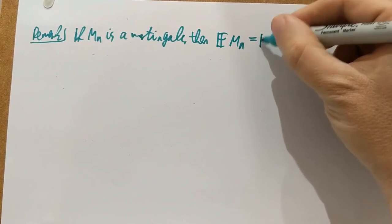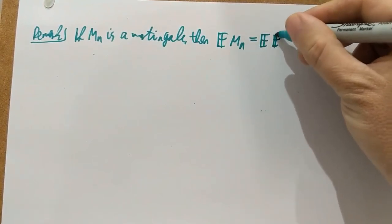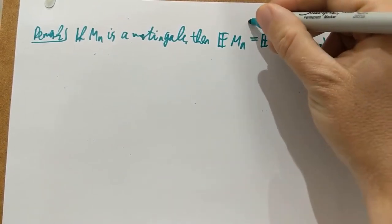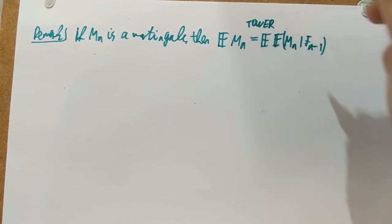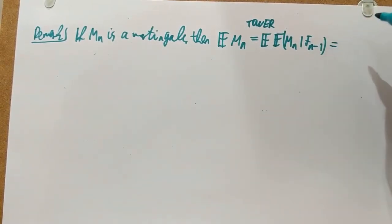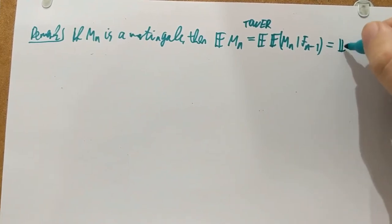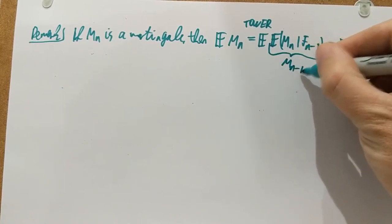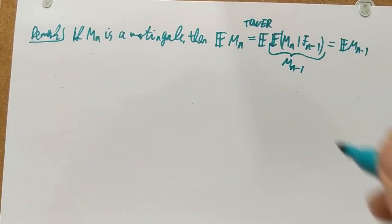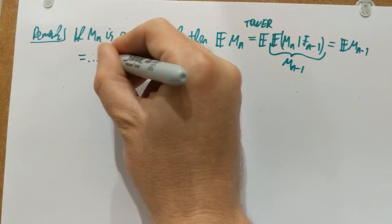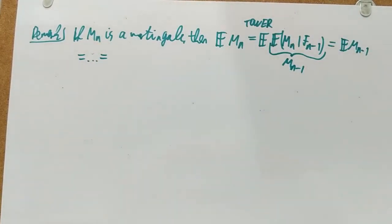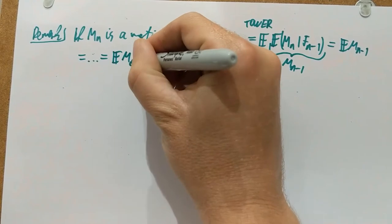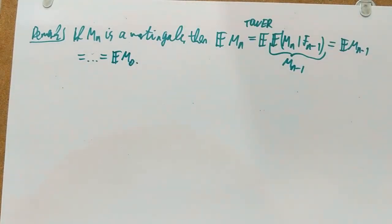Why is that? It's very simple. I just apply a tower rule on the sigma algebra F_{N-1}. By the martingale property, I get M_{N-1}. So E[M_N] = E[M_{N-1}] = E[M_{N-2}] = ... = E[M_0]. The expectation of a martingale is constant.